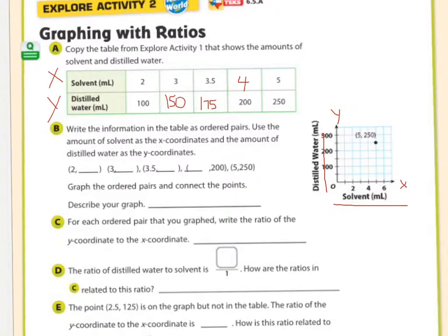I'm going to delete that real quick. So for 2, if your solvent is 2, the water was what? It was 100. When it was 3, it was 150. When it was 3 and a half, 175. When it's 200 milliliters of water, we needed 4 of the solvent. And then they want us to graph these.